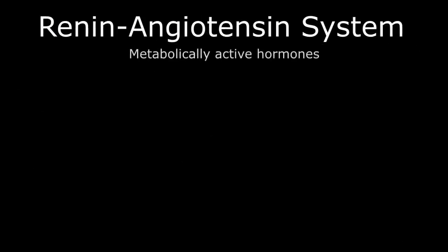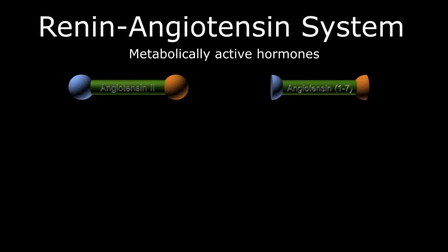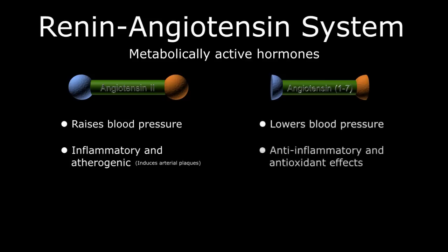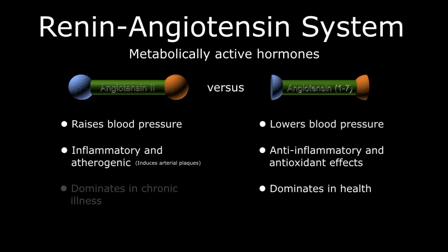Theoretically, excluding the initial viral load and immune system integrity factors, initial data suggest all of this may be explained by the ACE2 surface protein and its relationship to the renin-angiotensin system. The two dominant active hormone configurations are angiotensin 2 and angiotensin 1-7. Angiotensin 2 raises blood pressure and appears to have inflammatory and atherogenic properties, meaning it causes plaques to form in the vessels of our body. Angiotensin 1-7, on the other hand, lowers blood pressure and appears to have anti-inflammatory and antioxidant effects, reducing atherosclerotic disease in our vessels. In young, healthy, and physically fit individuals, angiotensin 1-7 is king. However, in a sedentary, elderly individual with heart failure, hypertension, diabetes, and a poor diet, angiotensin 2 would rule.